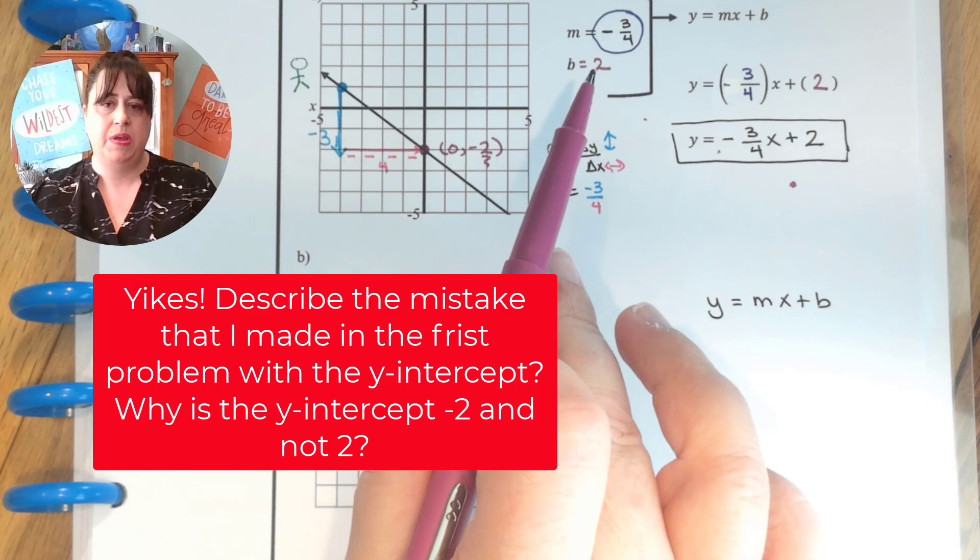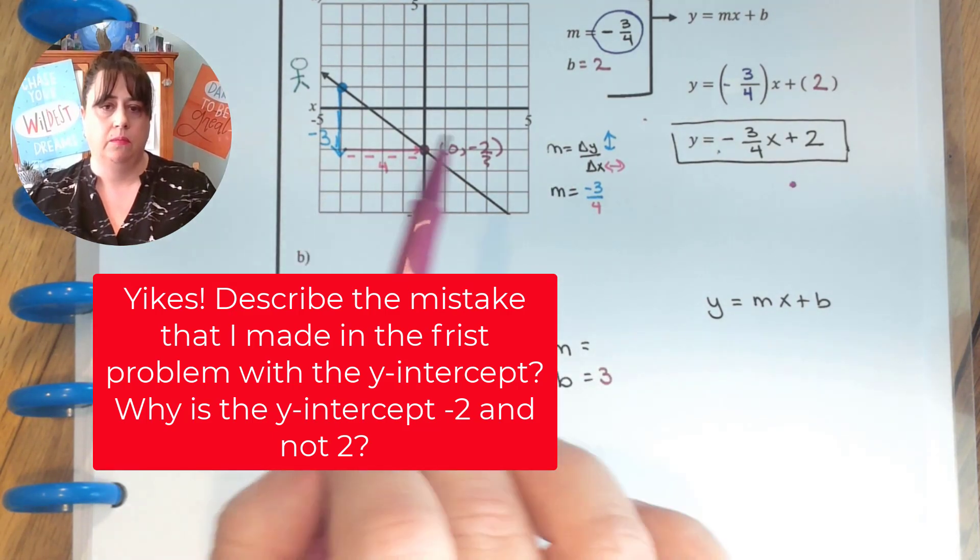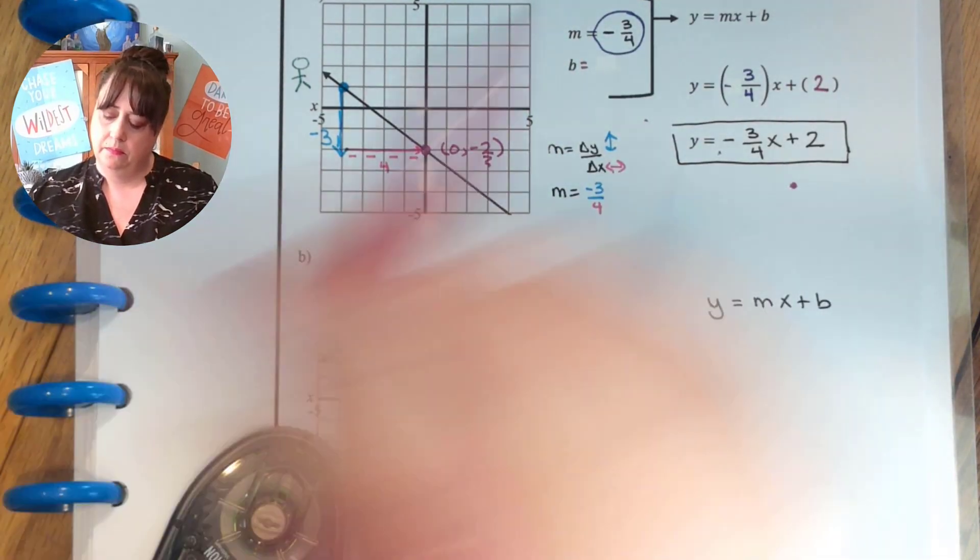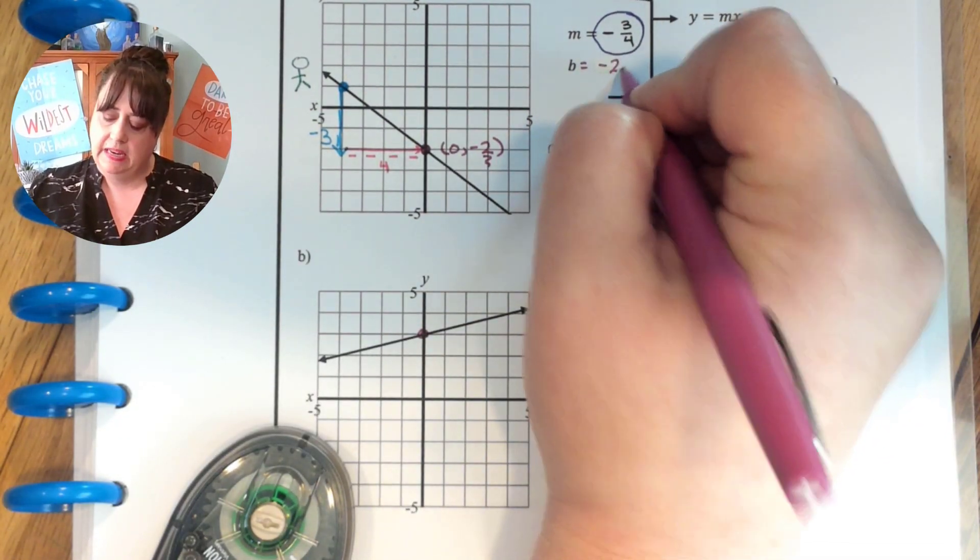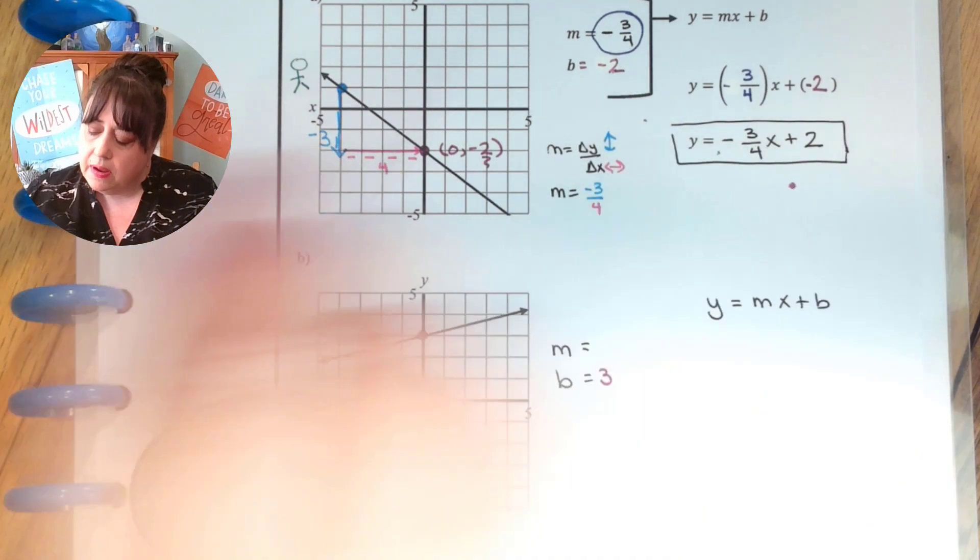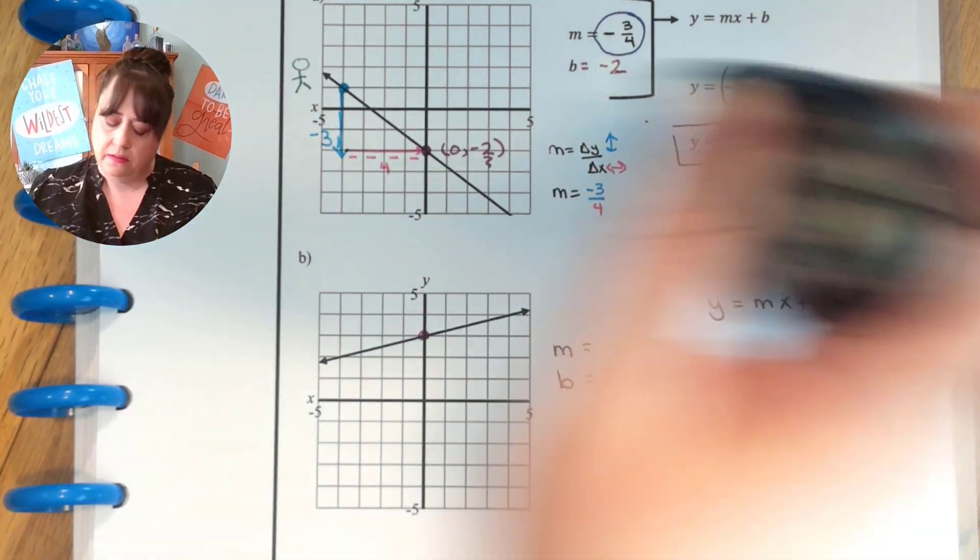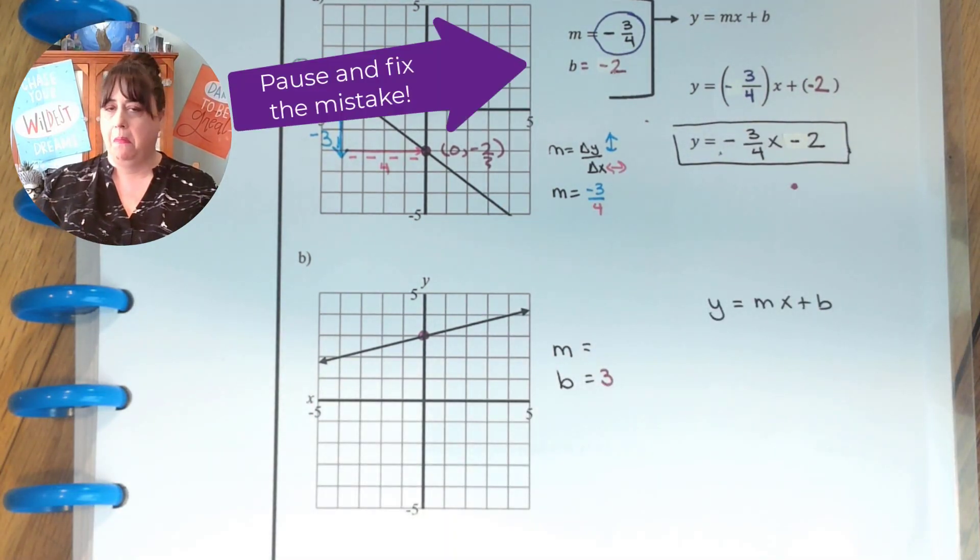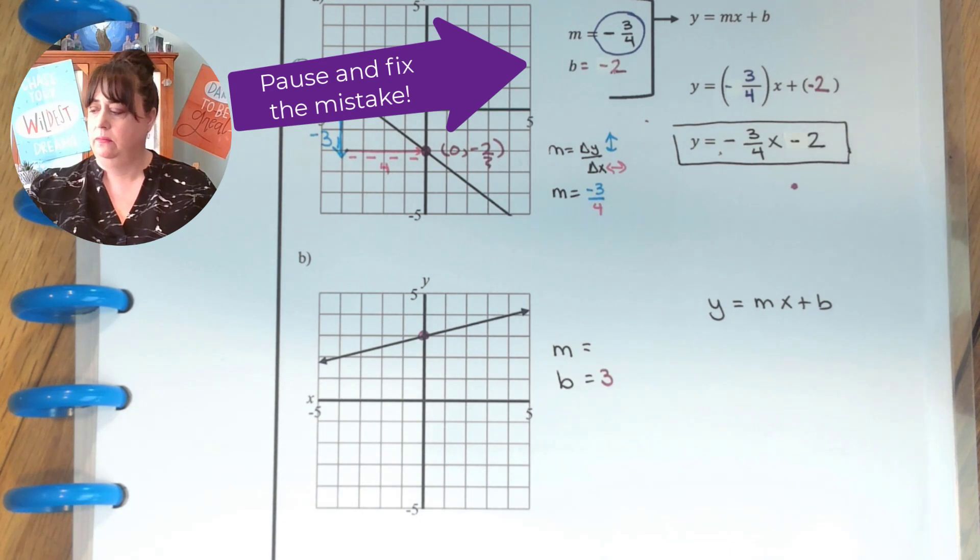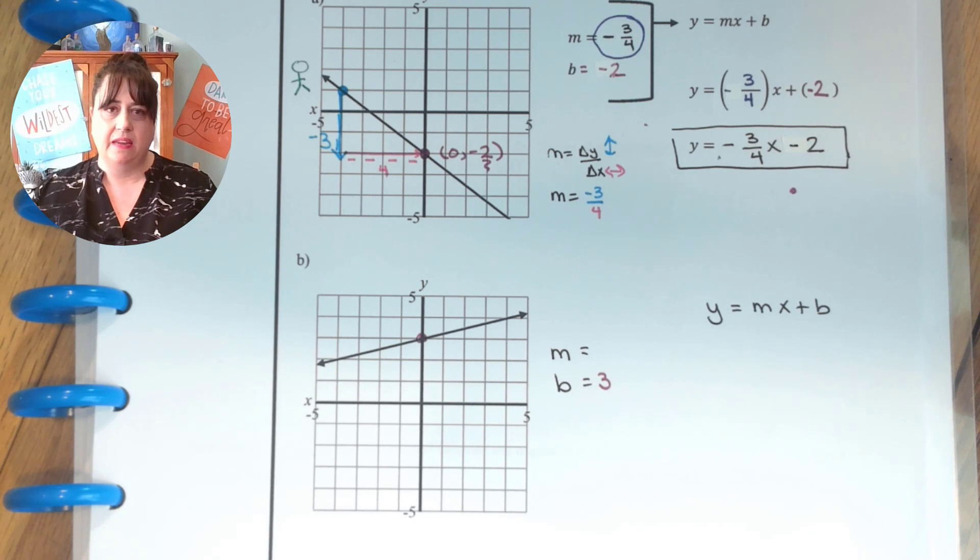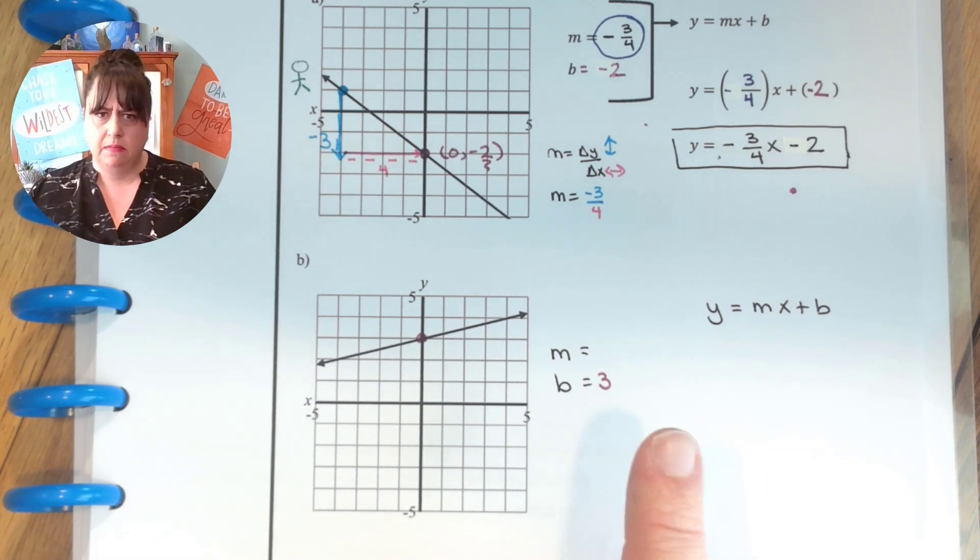Ah, I made a mistake here. b is not 2. b is negative 2. That's a negative 2. Which makes this a negative 2. And adding a negative is subtraction. I need to slow down. Okay, back to this one. It's okay if we make mistakes. That's what erasers and whiteout is for. It's finding them and making them and correcting them that matters.